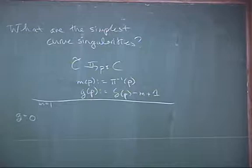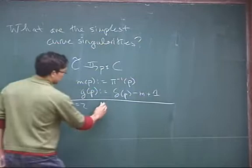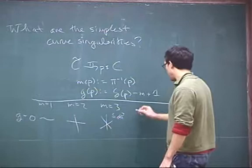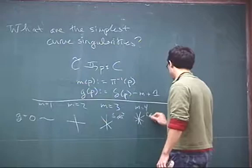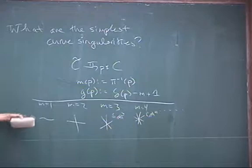If you ask what a genus 0 singularity with one branch is, it's just a smooth branch. For M equals 2 you have a node, and for M equals 3 you have three branches in A^3 — three completely transverse branches. This pattern continues: M=4 gives four branches in A^4, and so on. For genus 0, there is a single analytic isomorphism class of singularity for each value of G and M.